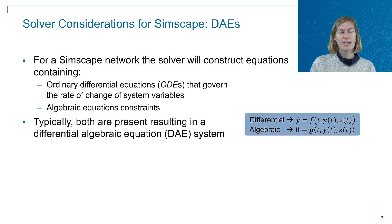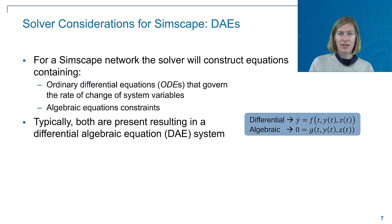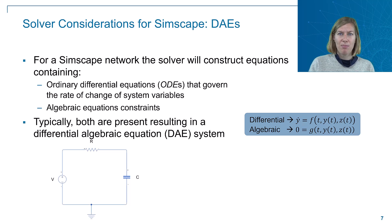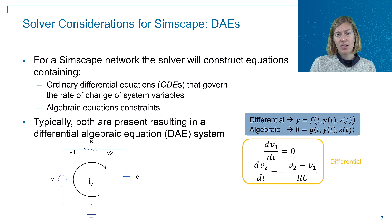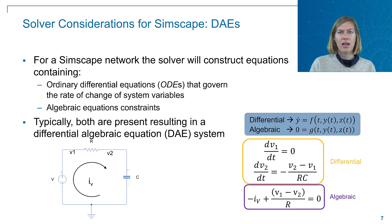Looking at a simple example of an electrical network, which creates two voltage variables and one current variable: these will be described by two differential equations describing the rate of change of the voltages, and it will introduce the current variable by adding an algebraic constraint. The solver will solve for all three of those variables.